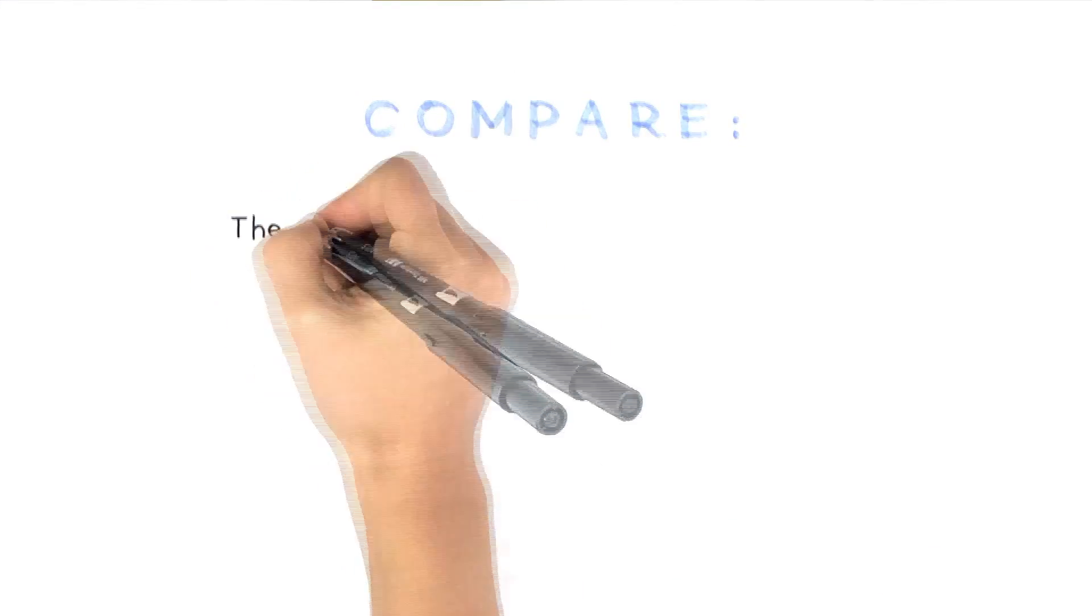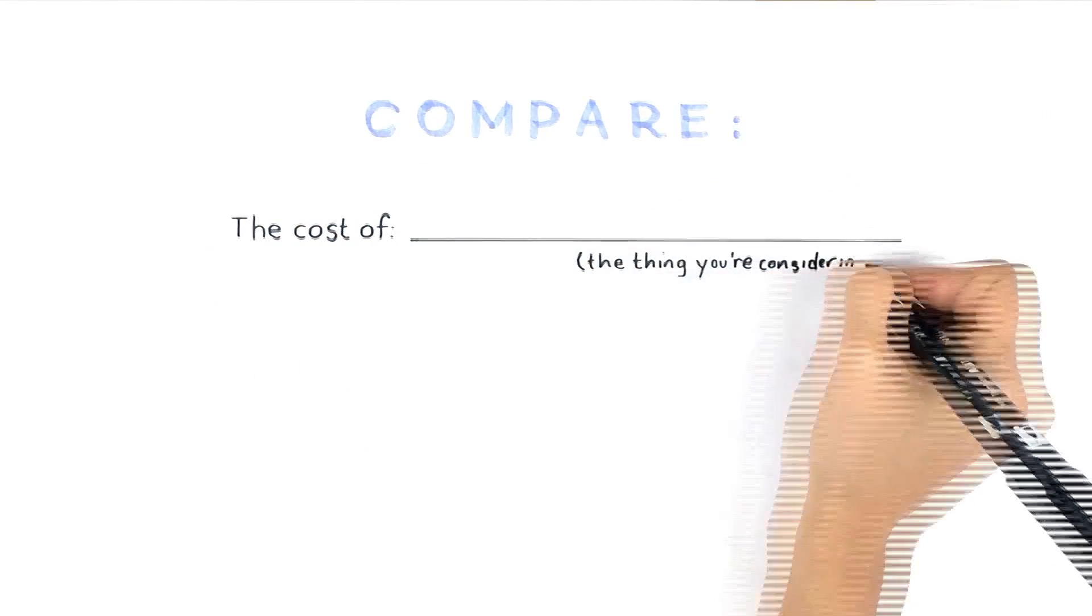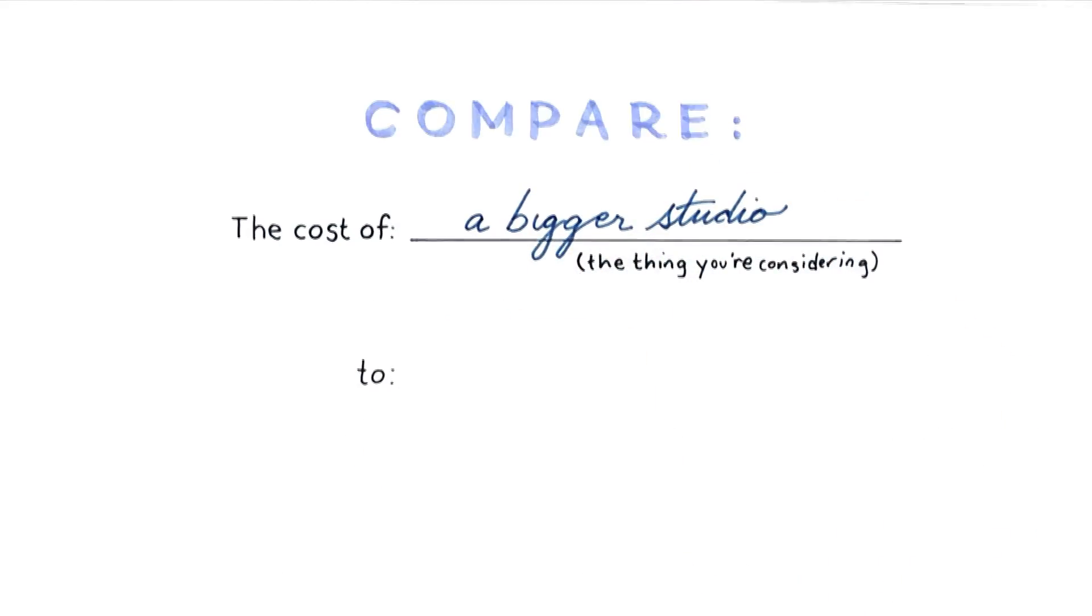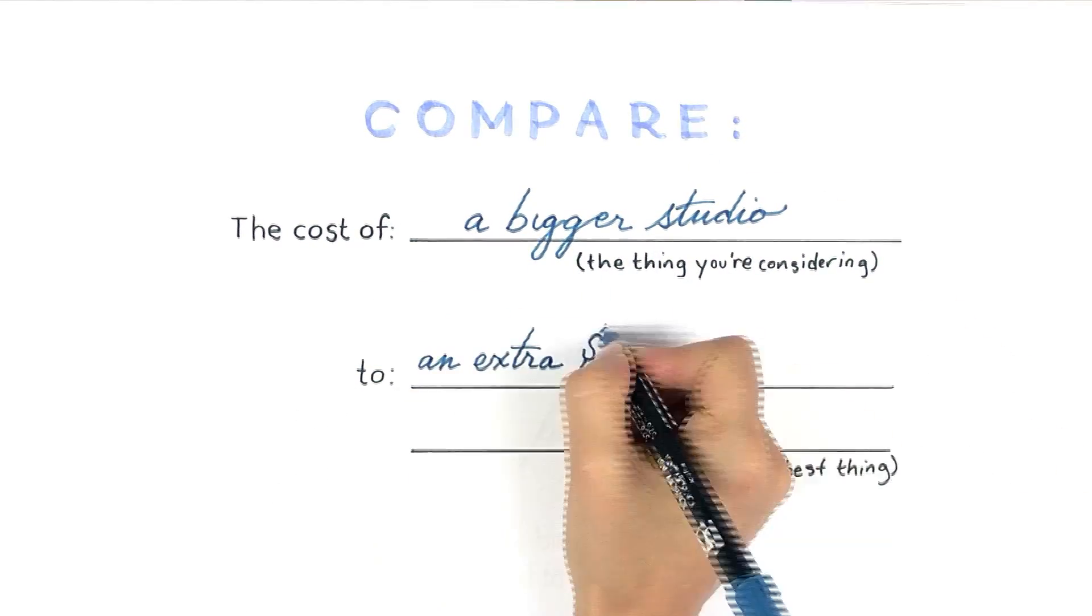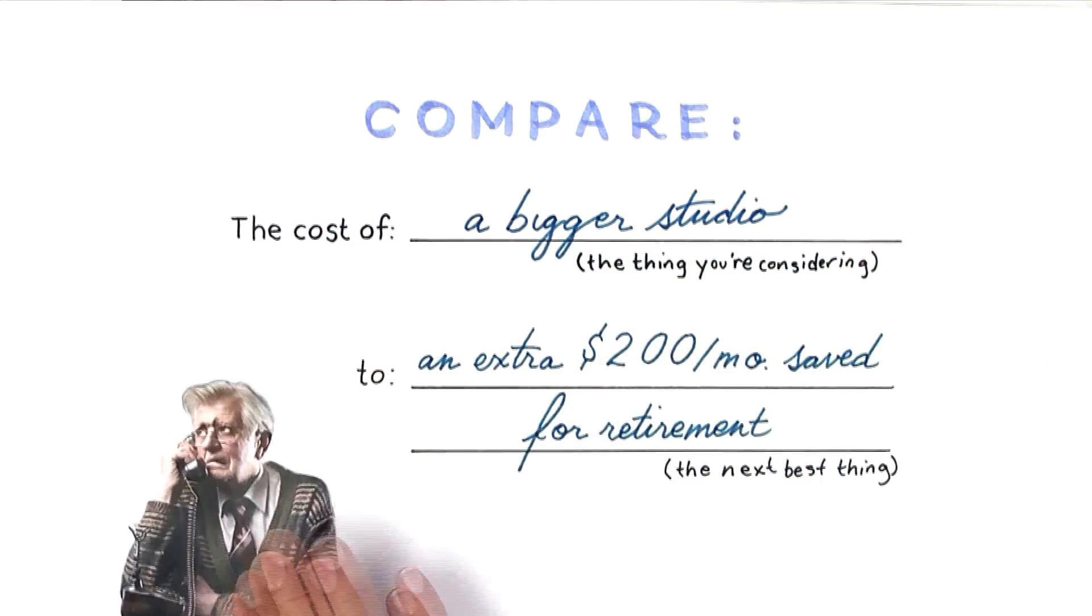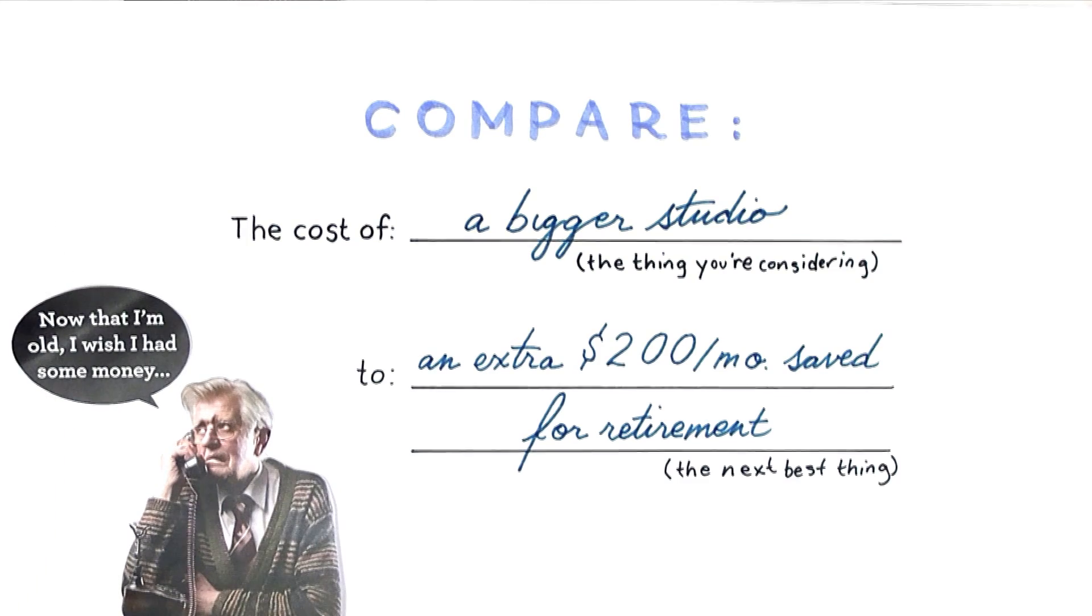For this example, let's use something that everyone needs to do, and what most of us aren't doing enough of. That's right, I'm talking about saving for retirement.